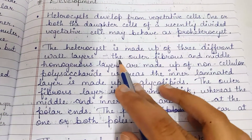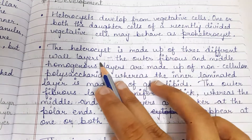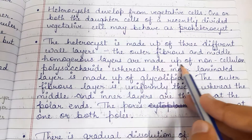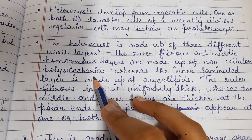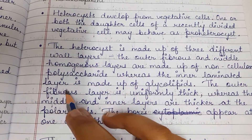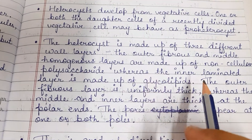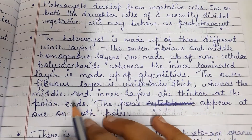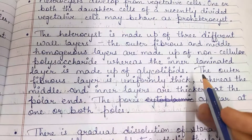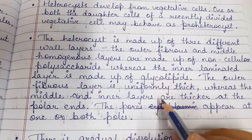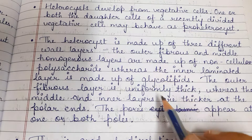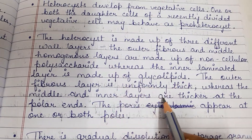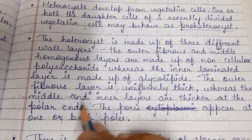The heterocyst wall is made up of three different layers: the outer fibrous layer, and the middle homogenous layer, which is made up of non-cellulosic polysaccharides. The inner laminated layer is made up of glycolipids. The outer fibrous layer is uniformly thick, whereas the middle and inner layers are thicker at the polar ends.